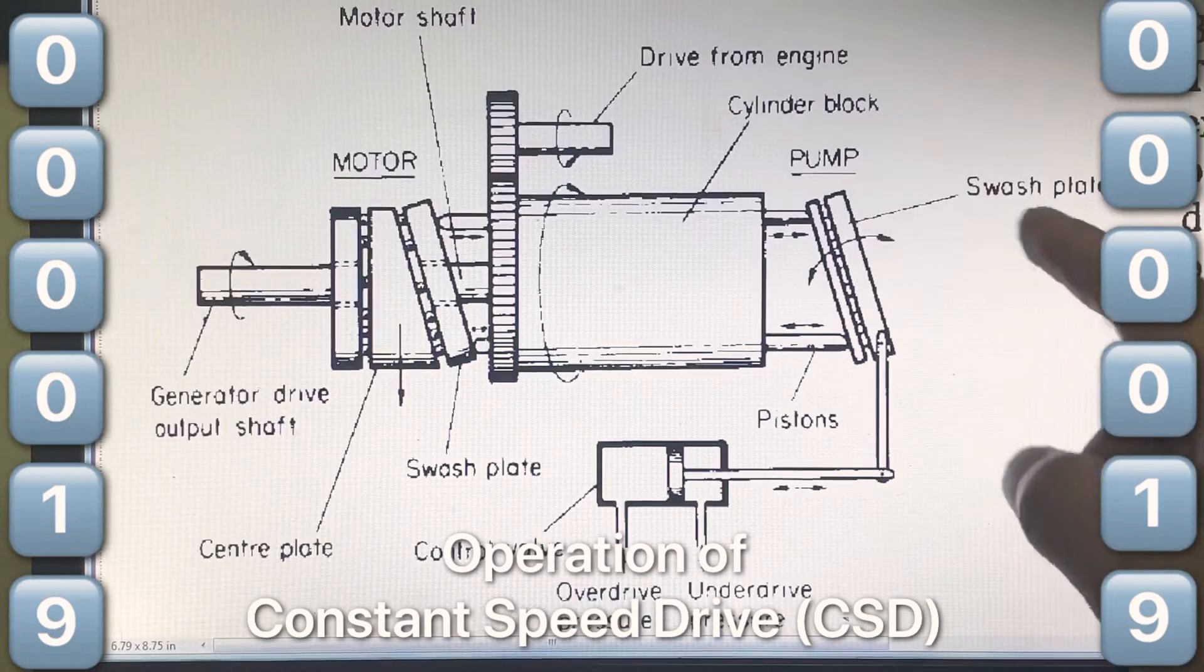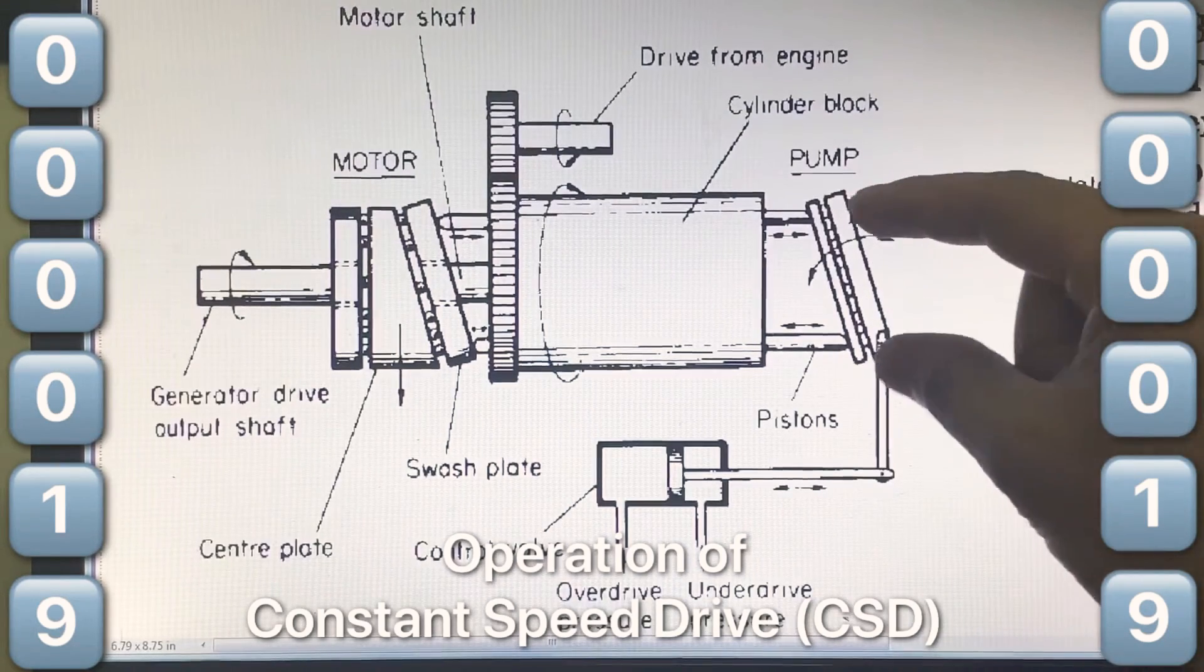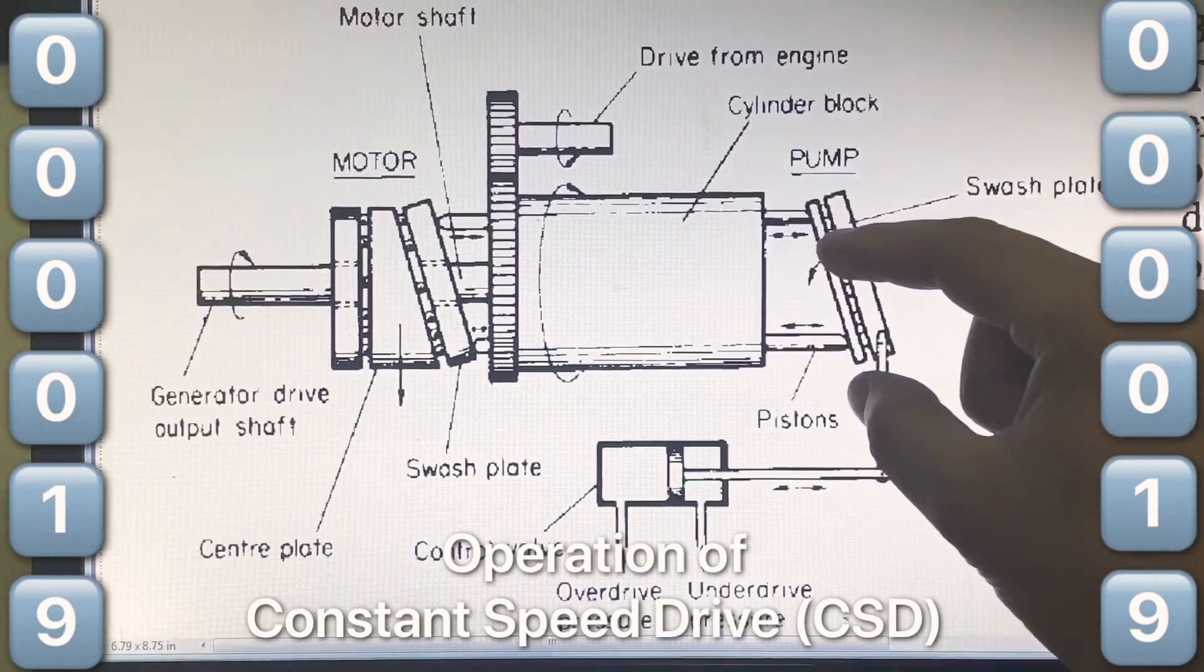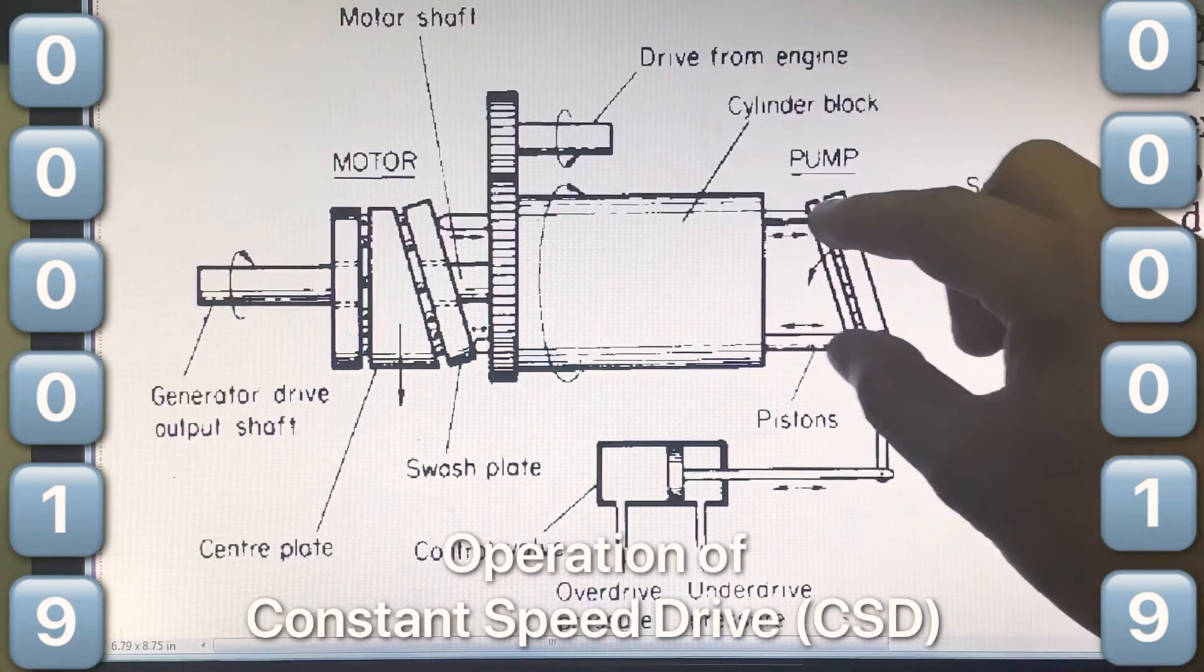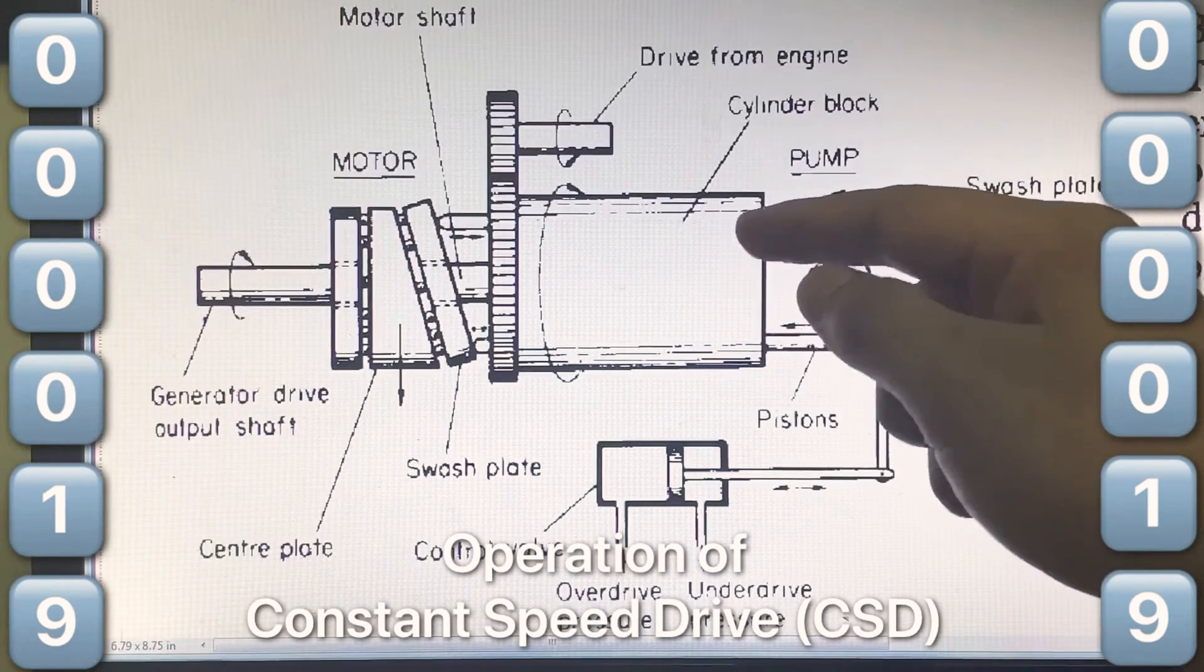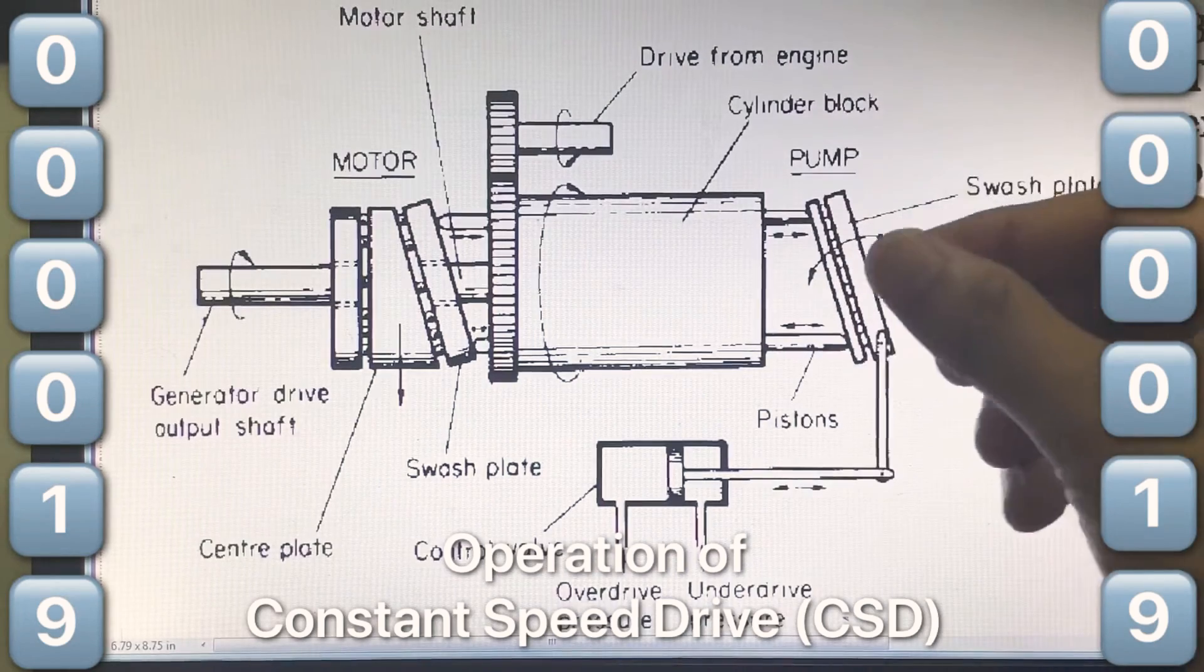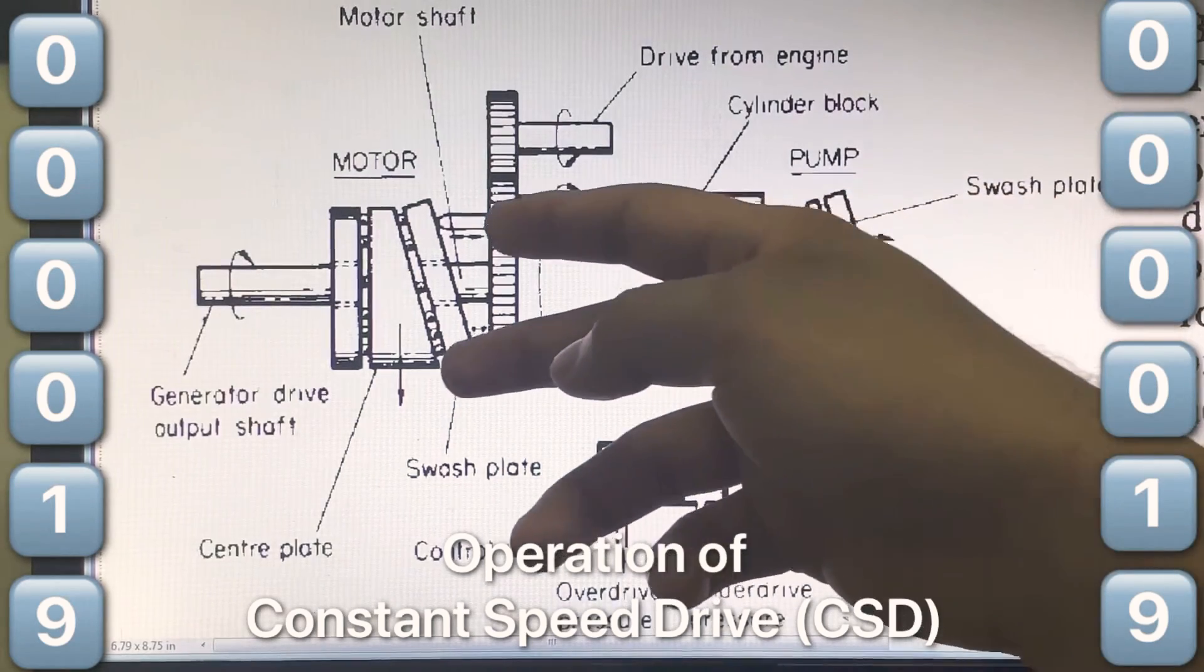Note that variations in the angle of this swash plate also varies the stroke of these pistons of the pump. As these pistons they go round with this cylindrical block.